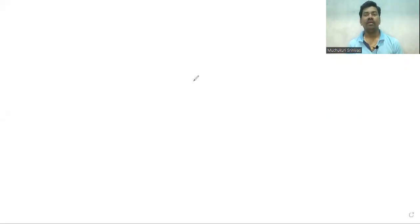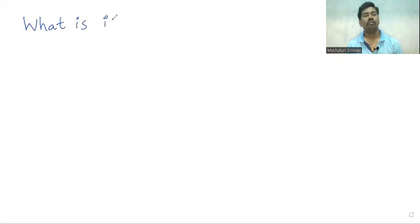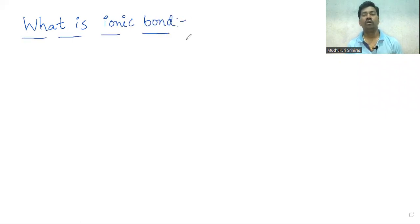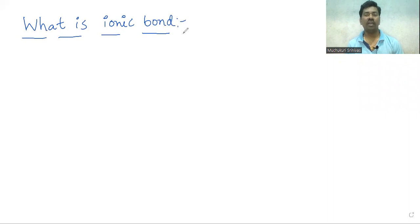Hello students. In this video we shall discuss about what is ionic bond. Ionic bond is formed between two ions only, generally cations and anions.